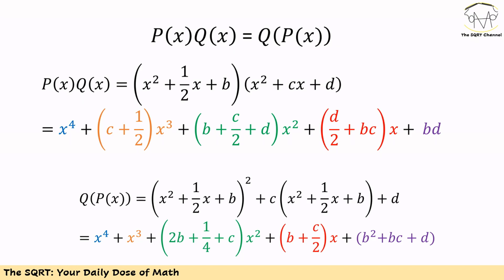Now we know P(x)·Q(x) is equal to Q(P(x)), so we are going to set them equal. We need to simplify each expression and find the coefficient for each power: x⁴, x³, x², x, and the constant. For P(x)·Q(x), the coefficient for x⁴ is 1, for x³ it is C + 1/2, and for x² it is B + C/2 + D.